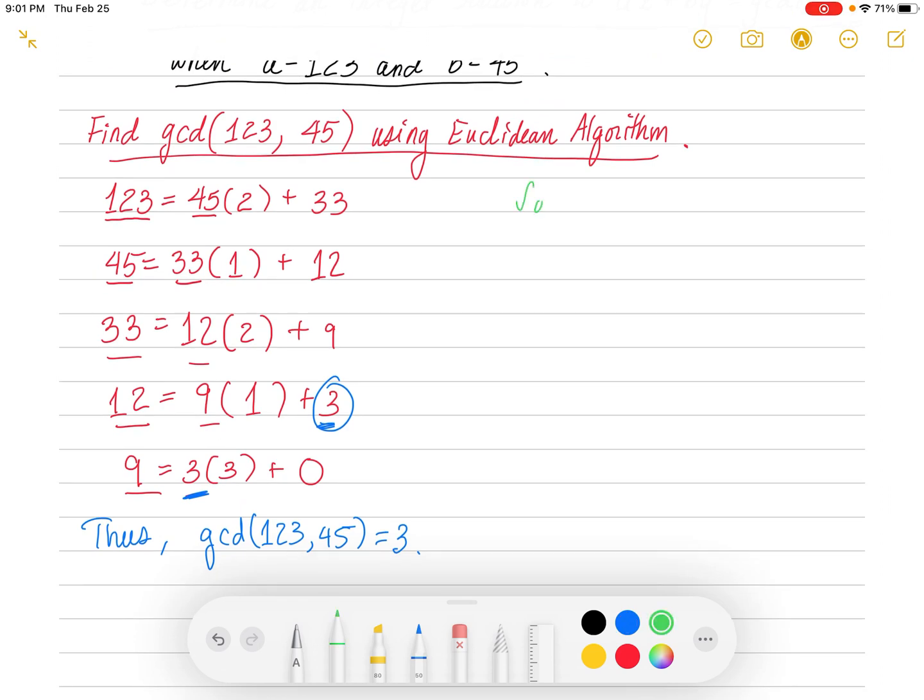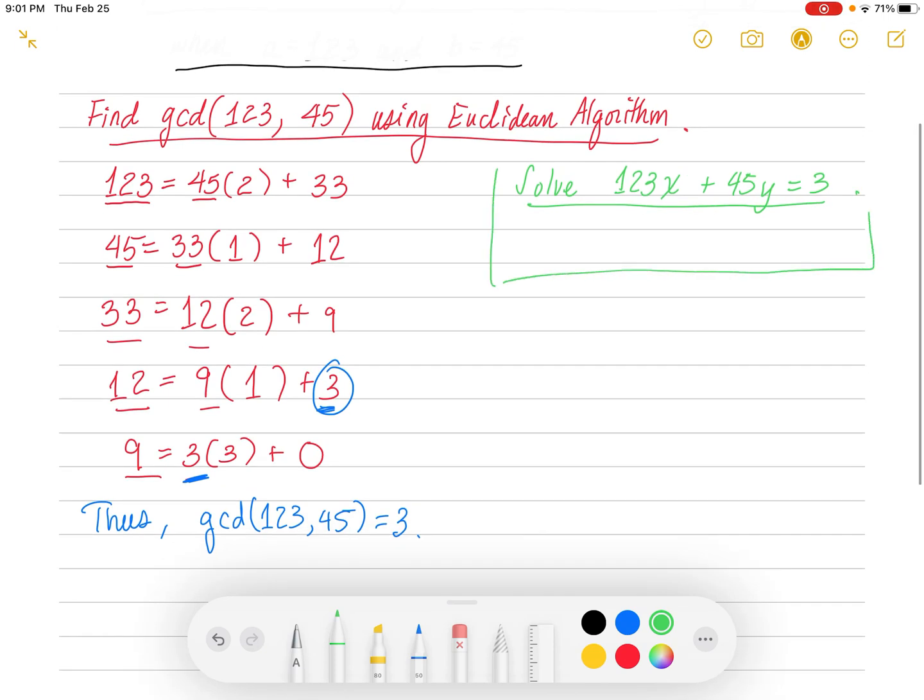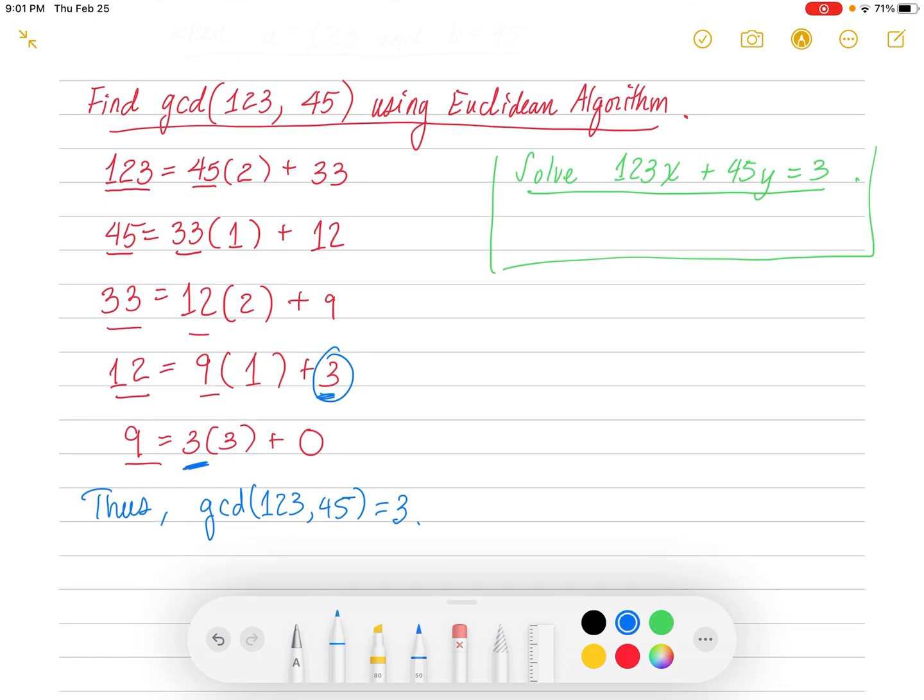So the next thing we want to do, we want to solve the equation 123x plus 45y equals 3. To do that, I'm going to start at the very last equation that had a positive remainder. I'm going to get the 3 by itself, so I'm going to keep the 3 here on the right-hand side of the equation. I'll subtract 9 from both sides. So I'm going to have 12 minus 1 times 9, or just 9. I'm underlining my 12 and my 9, they're important numbers.